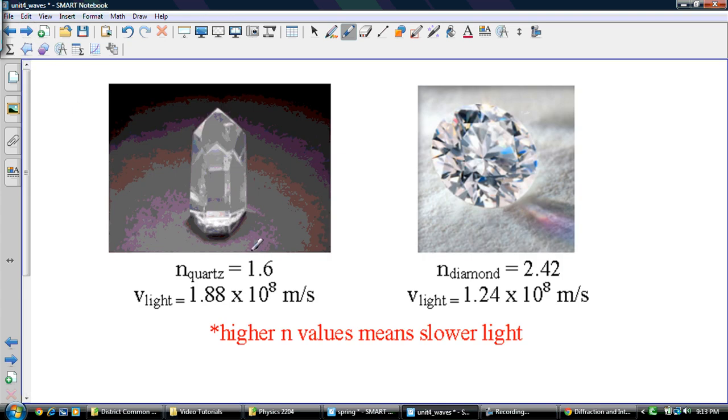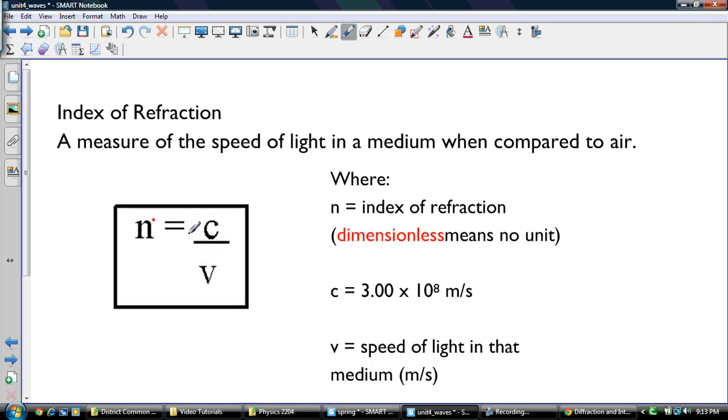Here's some index of refraction. So 1.6 for quartz, 2.42 for diamond. So higher N values mean slower light. And you can look at the formula and see that. So the higher N value means slower light. This means that this is lower because the speed of light in that object is slower. And this is the speed of light in the vacuum, basically.